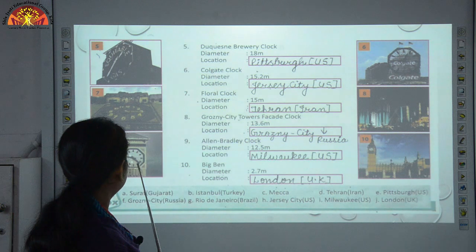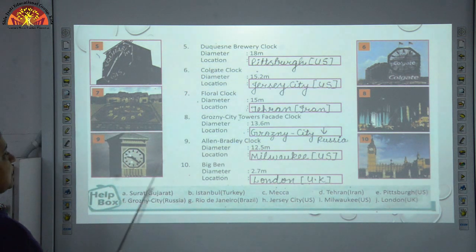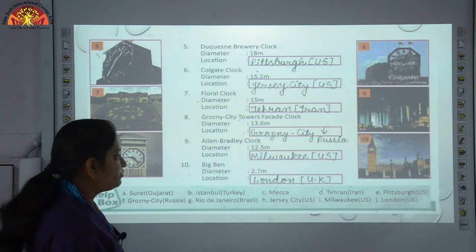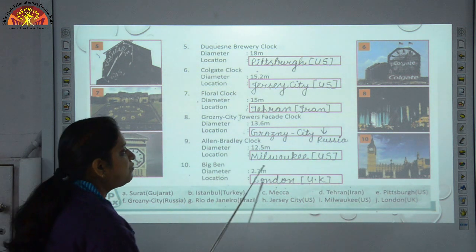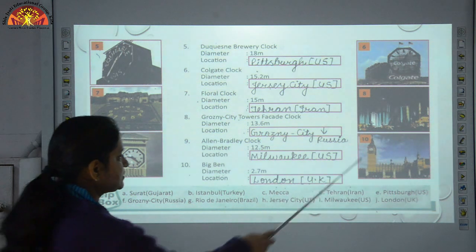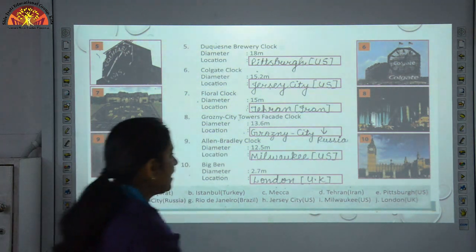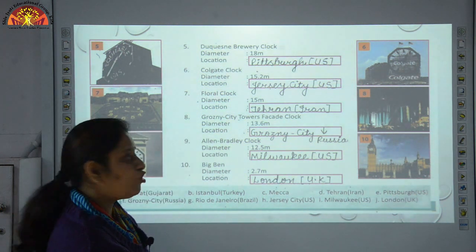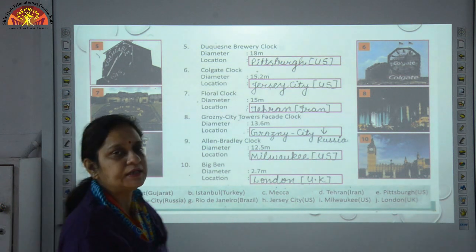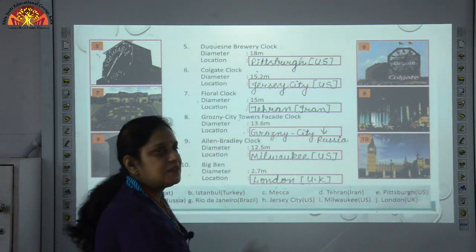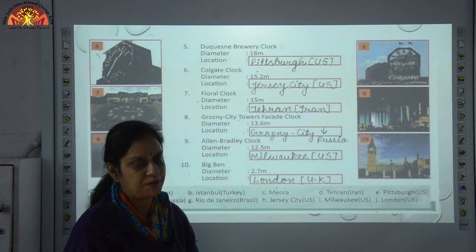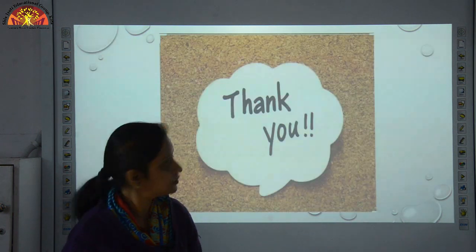And the last — as you can see in the picture, Big Ben. Its diameter is 2.7 meters and location is London, UK. Fill all the answers in a very neat and clean handwriting. I hope you understood the chapter. Thank you.